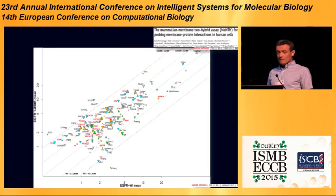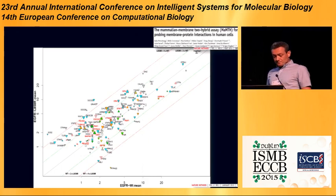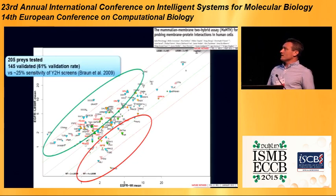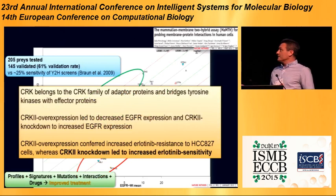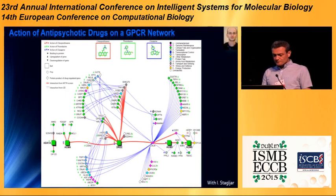In another paper with Igor Stagliar's group from Toronto, we looked at predicting novel interactions for EGFR. We identified not only EGFR-specific interactions but also interacting partners specific to a mutation very frequent in non-small cell lung cancer. Through additional analysis and assays, we identified the CRK2 protein, whose expression and interaction with EGFR relates to treatment response. We were able to validate in cell line models that it actually increases erlotinib sensitivity, opening potential for new treatment options for lung cancer patients.